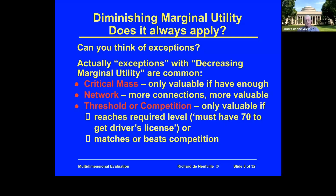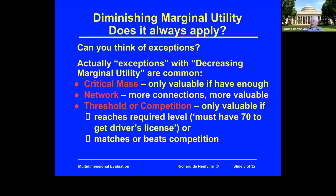Actually, the exceptions are very common. For example, critical mass: a thing might only be valuable if you have enough of it to do something with it. You might think of a nuclear reaction or power plant, or whether you have enough people to mount a team for soccer — you need enough resources around to make something of it. The idea of critical mass is that the individual pieces aren't terribly valuable at the beginning, but when you have enough of them, now you can really do something with it.